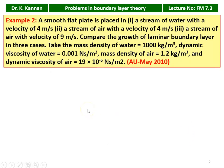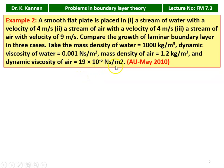Example number 2, from May 2010 question paper. A smooth flat plate is placed in: (1) a stream of water with a velocity of 4 m/s, (2) a stream of air with a velocity of 4 m/s, and (3) a stream of air with a velocity of 9 m/s. Compare the growth of the laminar boundary layer in the three cases. Given: density of water = 1000 kg/m³, dynamic viscosity of water = 0.001 N·s/m², density of air = 1.2 kg/m³, dynamic viscosity of air = 19 × 10⁻⁶ N·s/m².